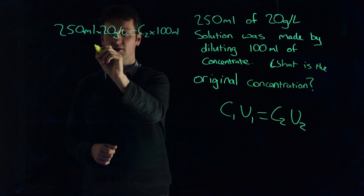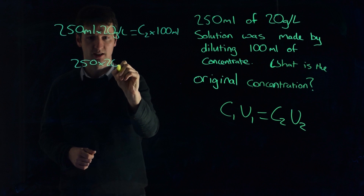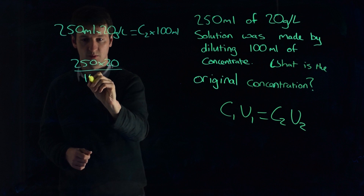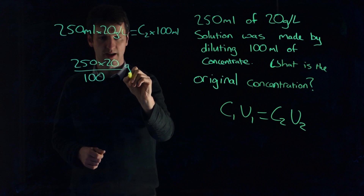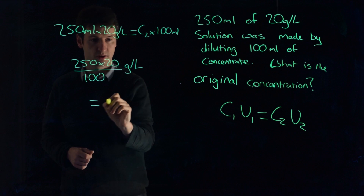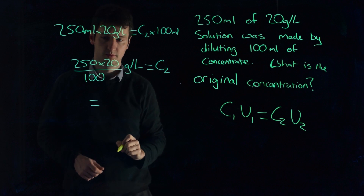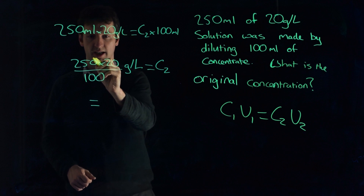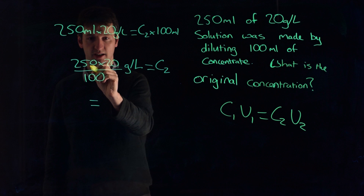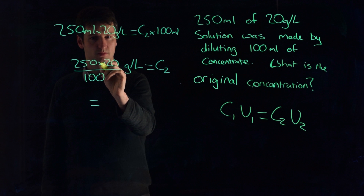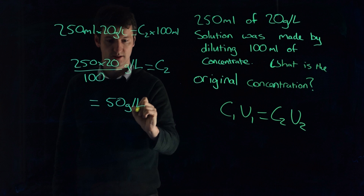So rearranging this, putting the 100 on the bottom, we get 250 multiplied by 20 divided by 100. The milliliters cancel out and we're left with grams per liter, equal to concentration 2. So 250 multiplied by 20 divided by 100 is 50 grams per liter.